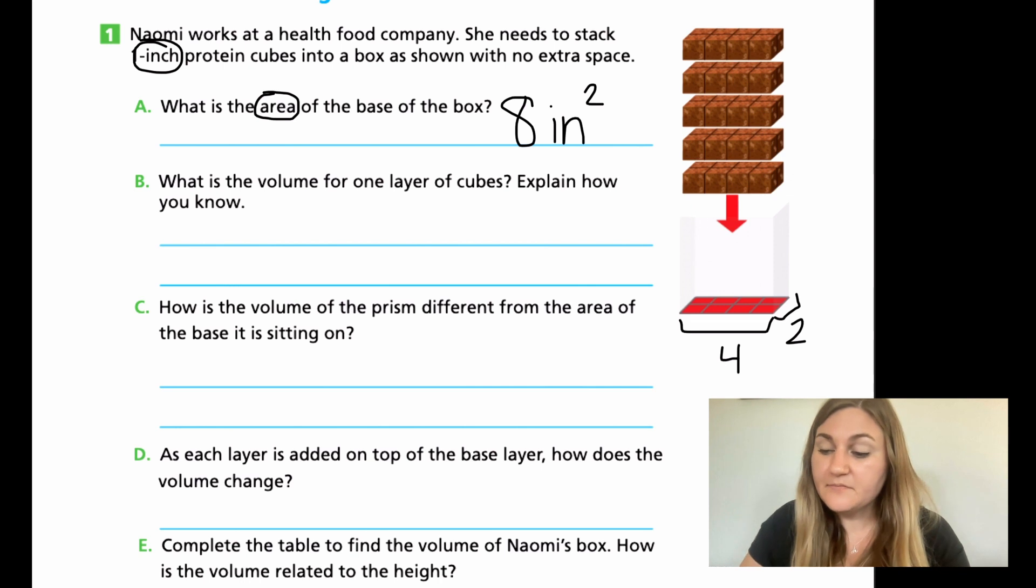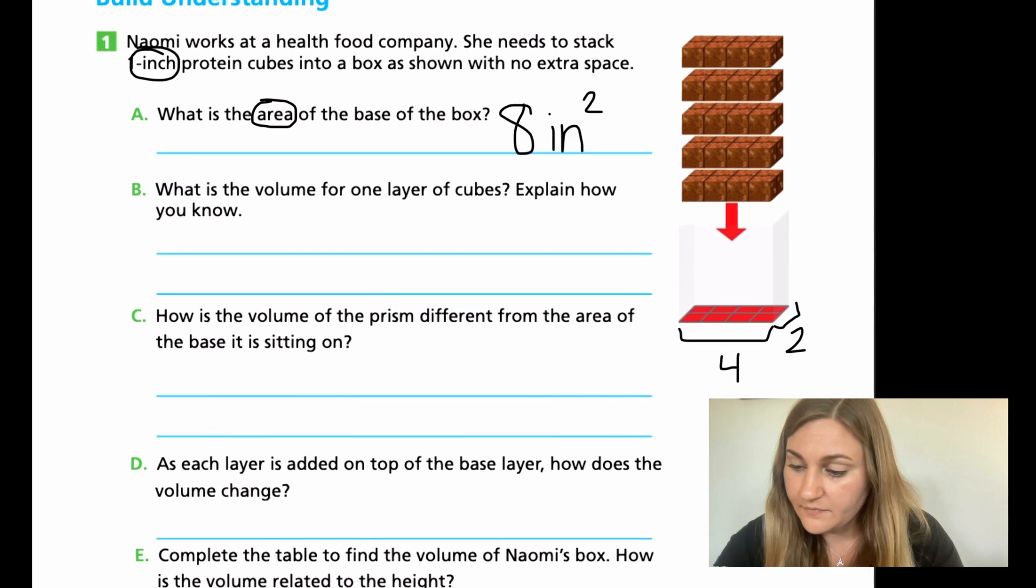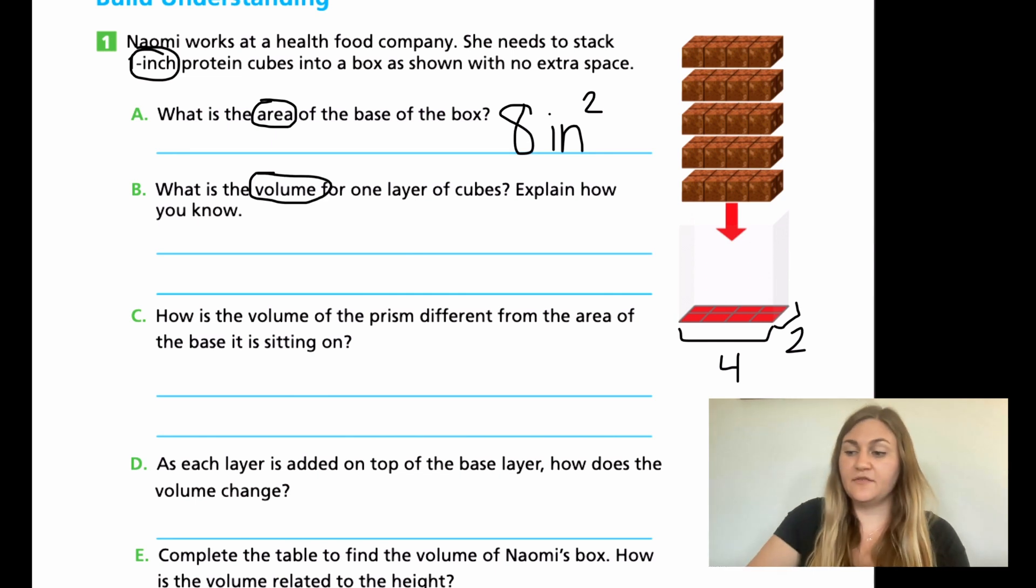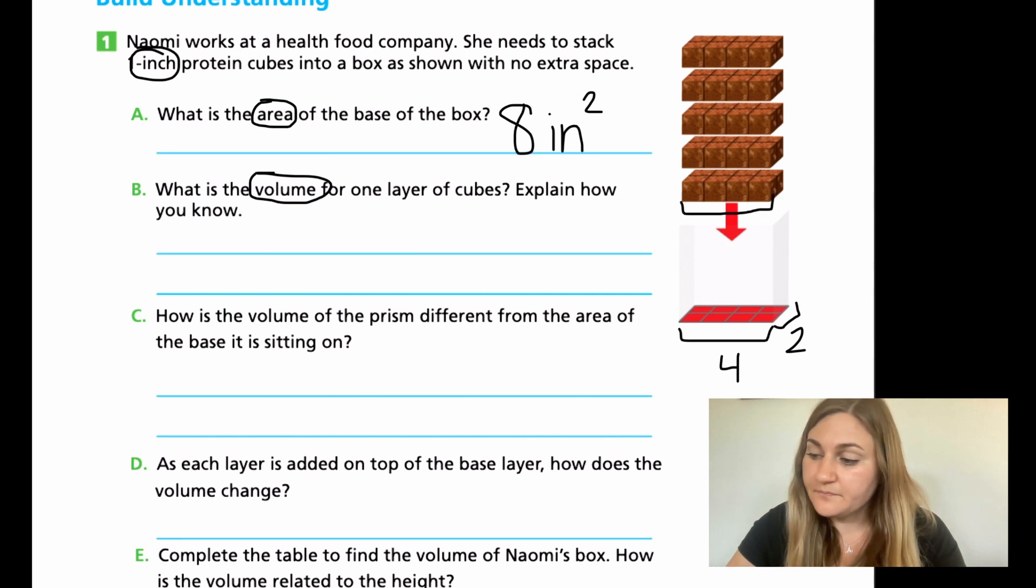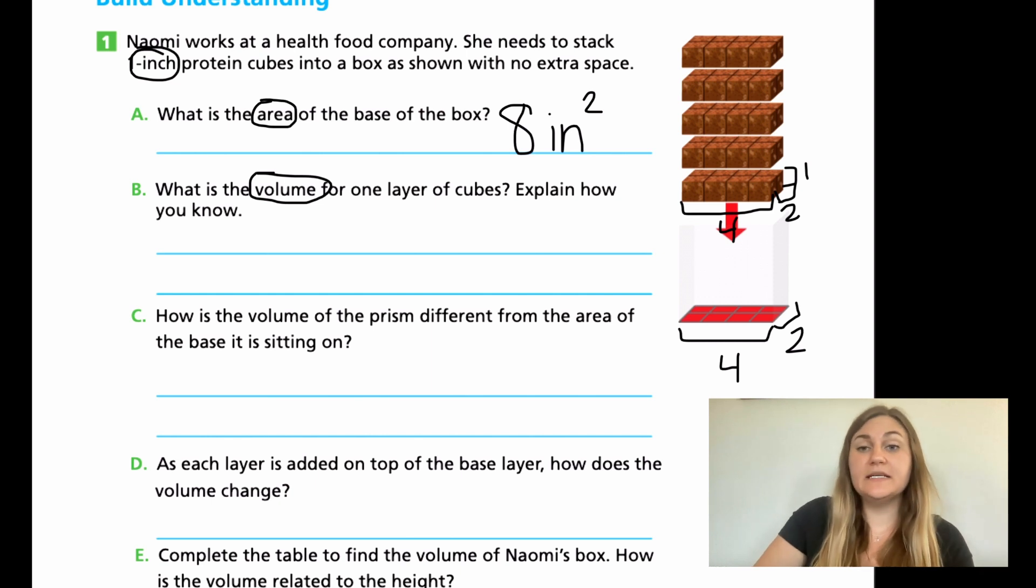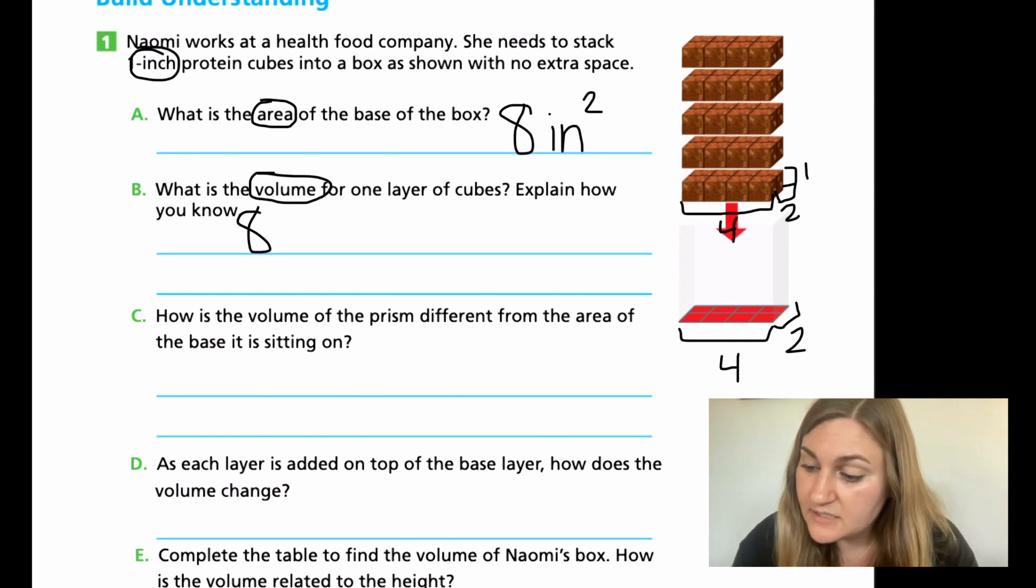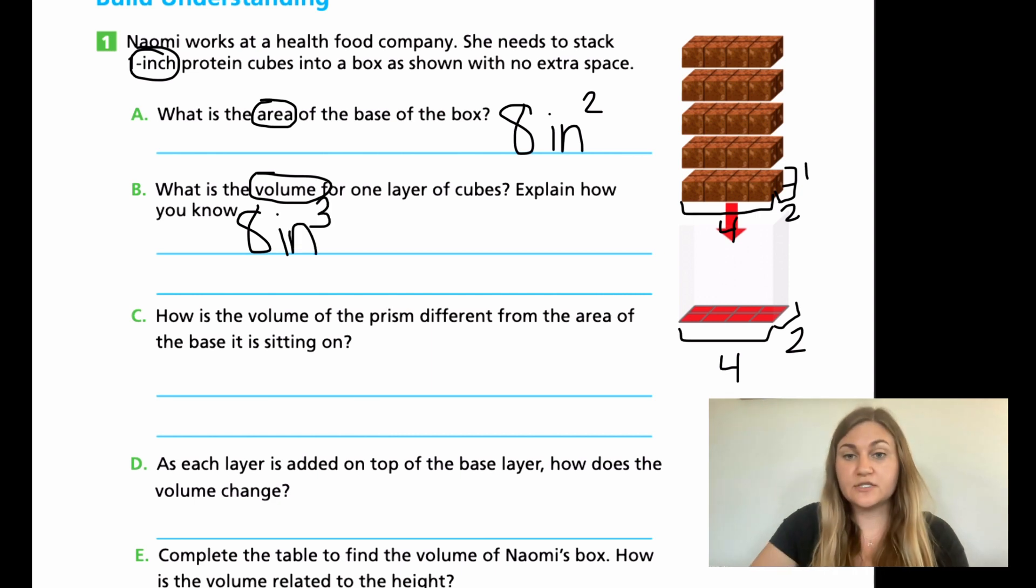That changes a little bit when we move into B. It says, what is the volume for one layer of cubes? Explain how you know. If you also put 8, you are correct. However, it changes slightly. In the cubes, I do have 4, and I do still have 2 here, but I also have another dimension of 1 as the height. So now I'm looking at three different dimensions here. So the volume is going to be 8. It's still inches, but now it's going to be cubed. There's going to be a 3 up in the exponent because there's three different dimensions that I'm looking at when I'm looking at volume.